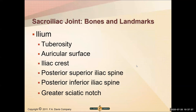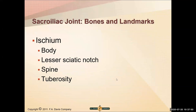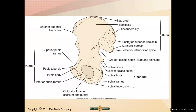The ilium has tuberosities, an auricular surface, the iliac crest, the posterior superior iliac spine (PSIS), the posterior inferior iliac spine (PIIS), and the greater sciatic notch. The ischium has the body, the lesser sciatic notch, the ischial spine, and the tuberosities. Wrapping around, we have our inferior pubic ramus, pubic body, superior pubic ramus, and up front we reach our ASIS.